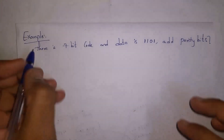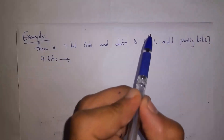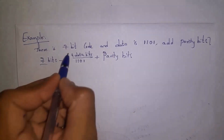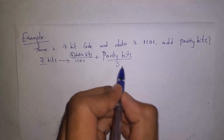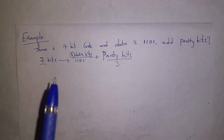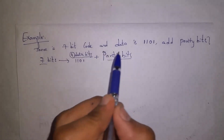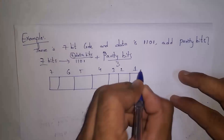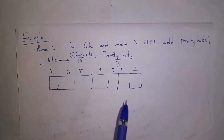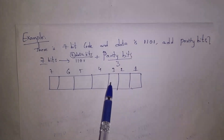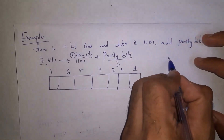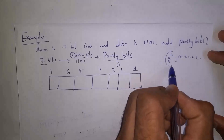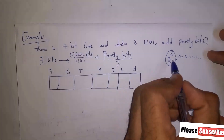In this problem, out of 7 total bits, 4 are data bits (1 1 0 1) and the remaining 3 are parity bits. Parity bits are extra bits added to the data to detect and correct errors. To find the positions of parity bits, we use the formula 2^n where n = 0, 1, 2, 3, and so on. So 2^0 = 1, 2^1 = 2, 2^2 = 4. These are the parity bit positions.